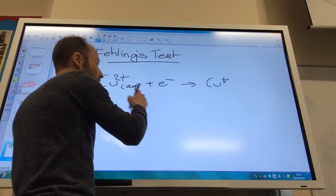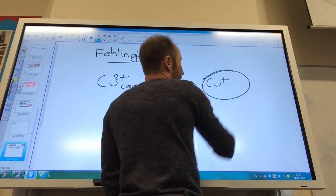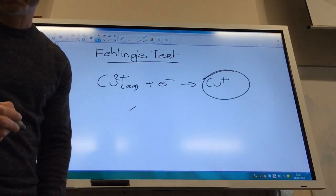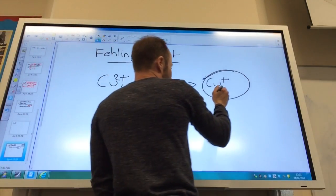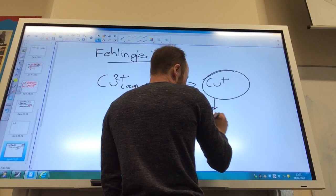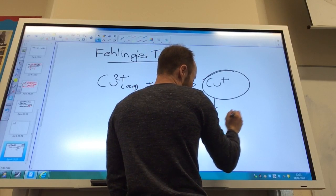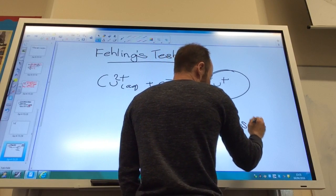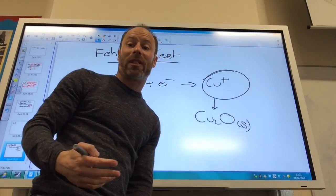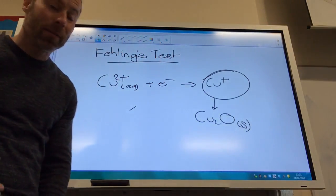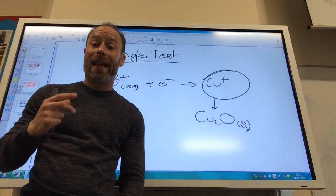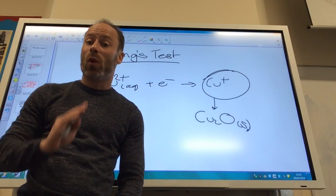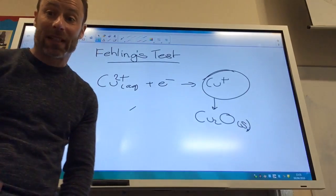So this goes from a blue solution. And this comes out here as a precipitate of copper one oxide. So this comes out in the solution as copper one oxide as a solid. And that's a brick red precipitate. So for this one, you see a blue solution give you a brick red precipitate. If you have an aldehyde, you won't see any changes for ketone because again, ketones cannot be oxidized.